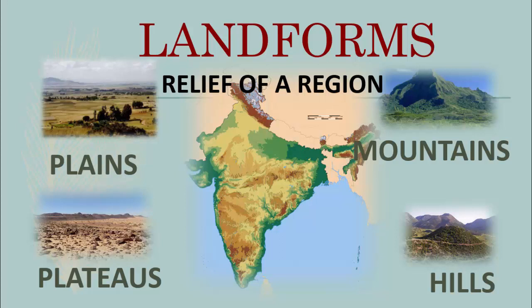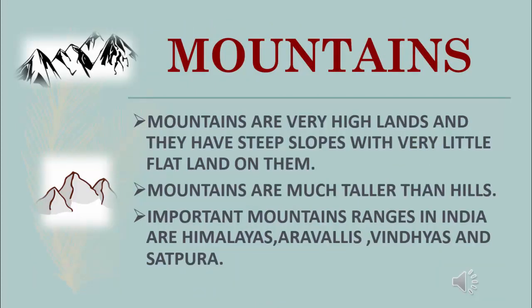There are three main kinds of landforms: mountains or hills, plateaus, and plains. Have you seen any mountains or hills? You must have seen several hills or even been to places on some mountain ranges. Mountains are very high lands and they have steep slopes with very little flat land on top. Mountains are taller than hills. The important mountain ranges in India are the Himalayas, Aravallis, Vindhyas, and Satpura mountains.